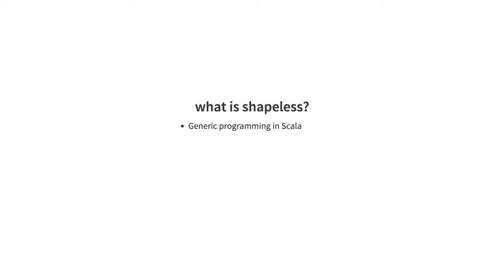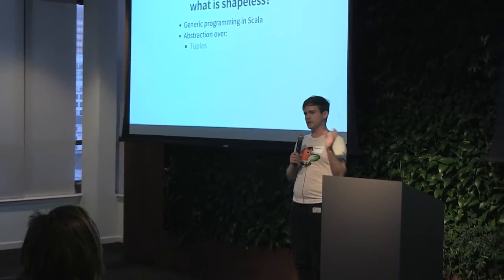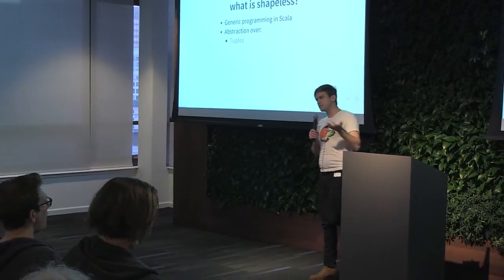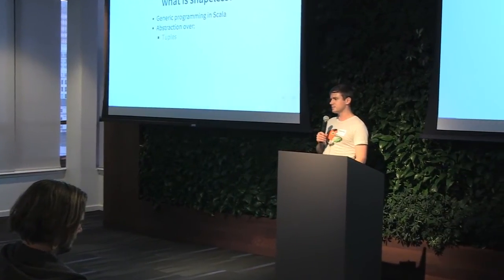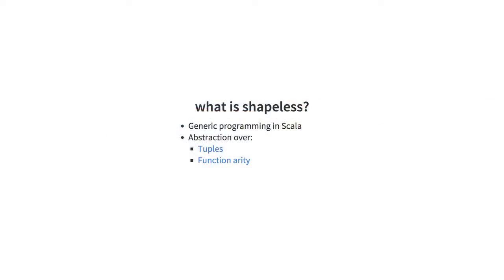Shapeless is a library for generic programming in Scala. It provides a bunch of abstractions and generic operations for things like tuples. How many people have at some point really wished that Scala gave you a way to take two tuples and combine them into a bigger tuple? This is something that feels like a piece possibly missing from the Scala standard library. Shapeless also gives you abstraction over arity — any time you have Tuple1, Tuple2, Tuple3, or Function1, Function2, Function3, the standard library isn't going to help you abstract over that, but Shapeless does.